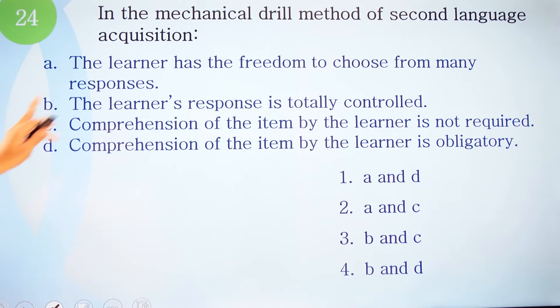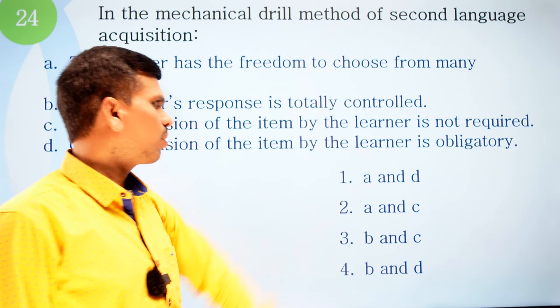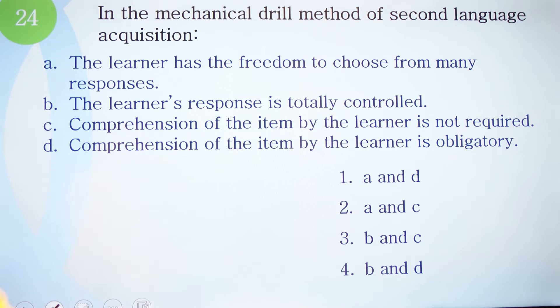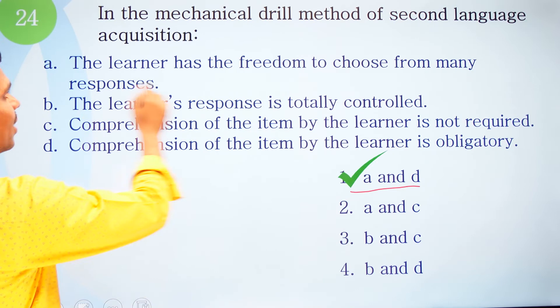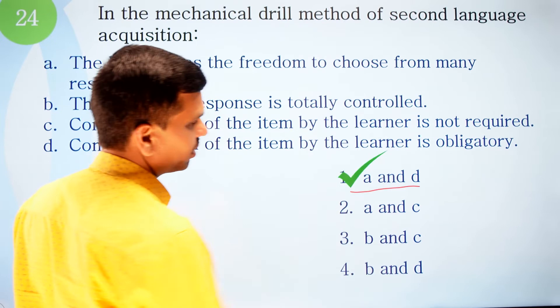Question twenty-four: In the mechanical drill method of second language acquisition, which statements are correct? A: the learner has freedom to choose from many responses; B: the learner's response is totally controlled; C: comprehension of the item by the learner is not required; D: comprehension of the item by the learner is obligatory. The correct option is A and D — the learner has freedom to choose responses, and comprehension of the item is obligatory.